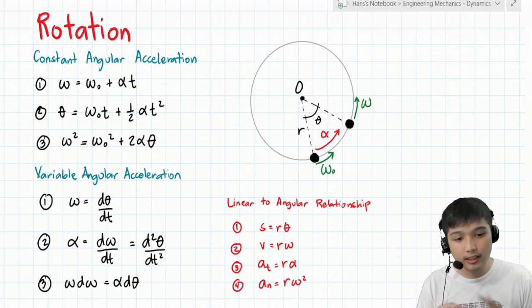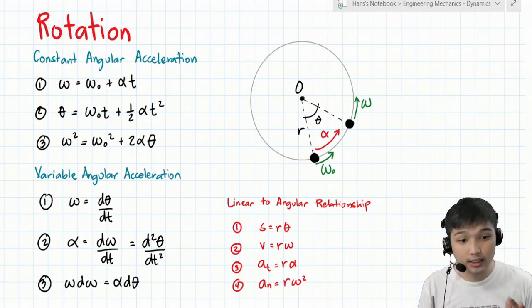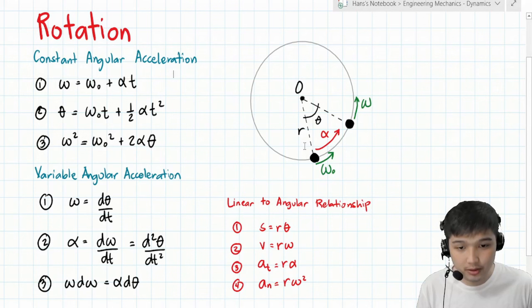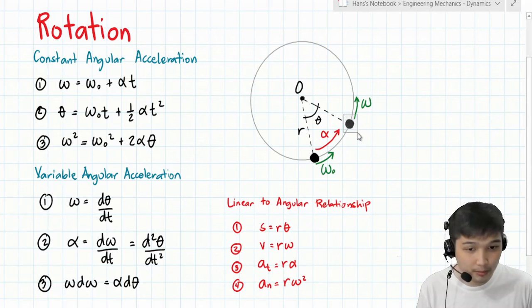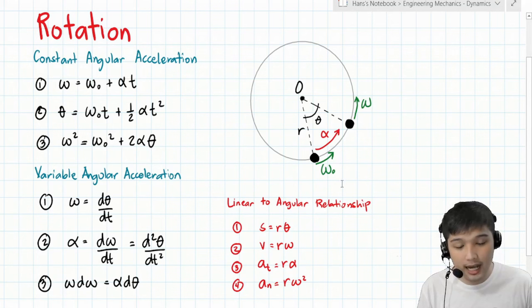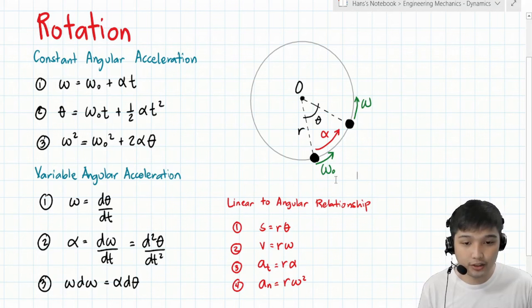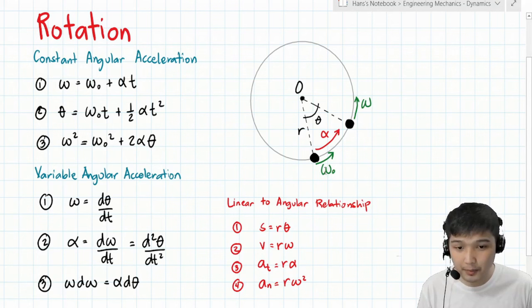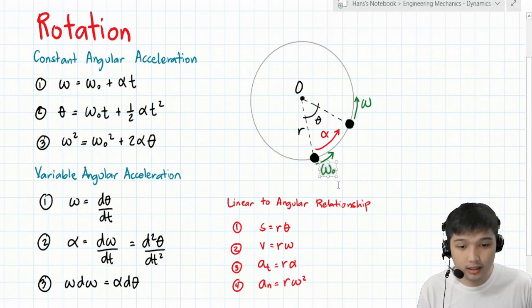So more or less, this is the same as what we discussed before, except that there is an additional term: 'angular.' Let us define those parameters using the following figure. The particle started at this point and ended up at this other point. Initially, it has an angular velocity — just like initial velocity, but angular. The angular velocity is expressed as omega, or omega sub O.